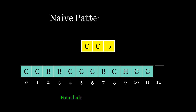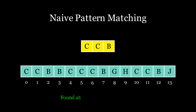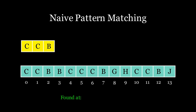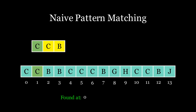Before moving on to the KMP algorithm, let's first take a look at how a naive pattern matching algorithm works. We slide the pattern over the text and start comparing the corresponding elements one by one. If all the elements of the pattern match, we note the index of the match. However, if any one element mismatches, we move the pattern one step forward and repeat the process.